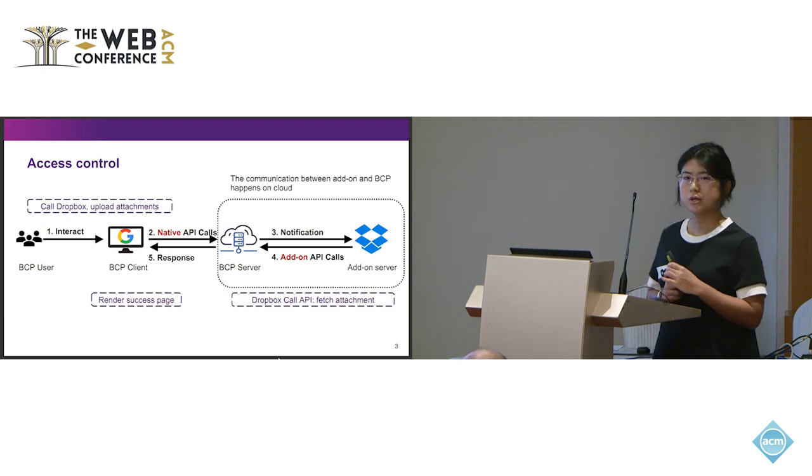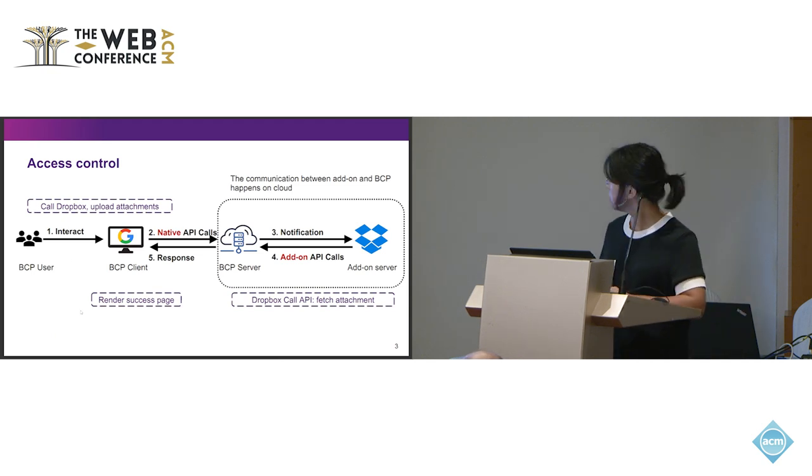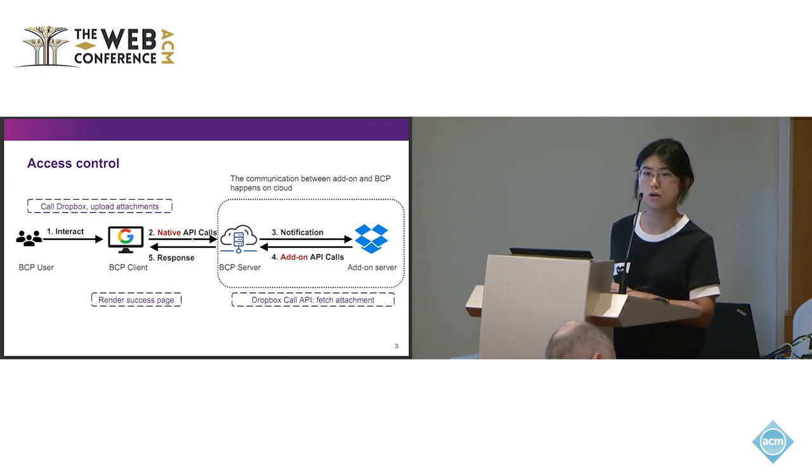If we want to understand these two research questions, we might get familiar with the access control balance. So here is one example. You can see that here is the BCP user. When the user want to interact with Google through their mobile or through their web browser, then the Google will interact with the server through their native API calls, maybe the Gmail, Google Doc, or Google Slide. Further, the Google server can communicate with the IDAM. Here we take the Dropbox as an example.